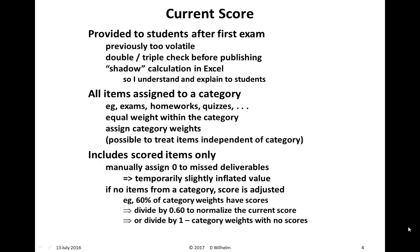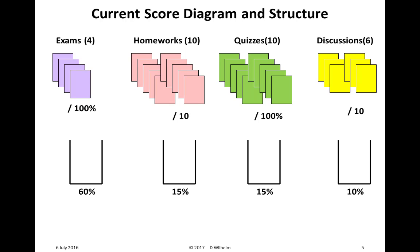Here's a current score diagram and structure. This particular one has exams, homeworks, quizzes, and discussions. There are four exams, each with a maximum score of 100%; 10 homeworks, each graded on a 0 to 10 scale; 10 quizzes where the maximum score is 100%; and six discussions scored on a 0 to 10 basis. The category weightings are: exams 60%, homeworks 15%, quizzes 15%, and discussions 10%.